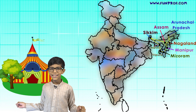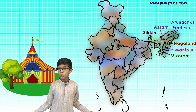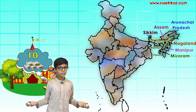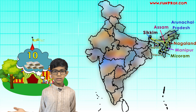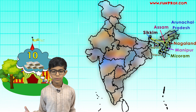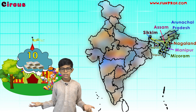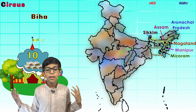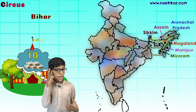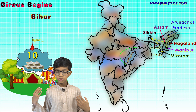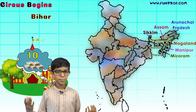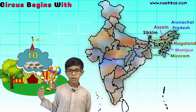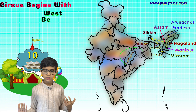Now let's go to the circus. The circus begins with a joker talking about ten kajukatlis. This is our next mnemonic. C for circus and C for Chhattisgarh. B for begins and B for Bihar. Circus begins with W for width — W for West Bengal.